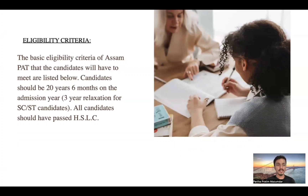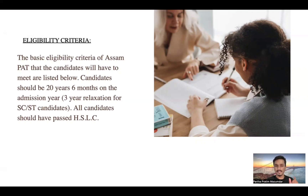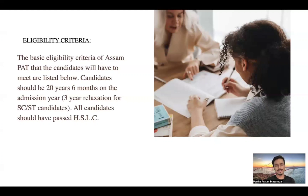Eligibility criteria? It's very simple. The basic eligibility criteria for SMPAT are listed below. Candidates should be a maximum of 20 years and 6 months in the admission year. All candidates should have passed HSLC — High School Leaving Certificate — meaning you should have passed class 10.